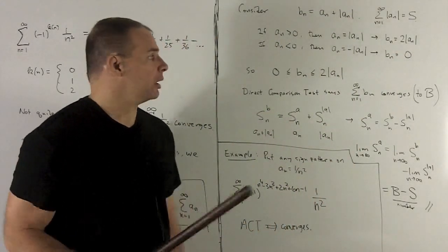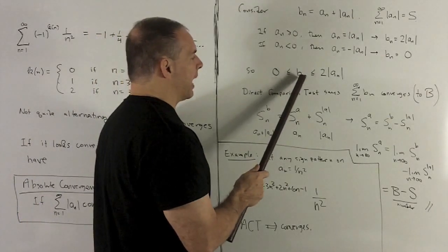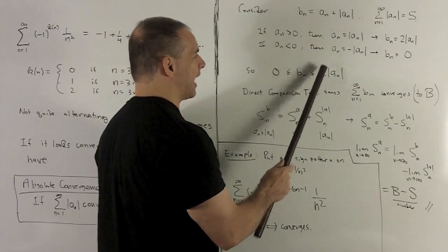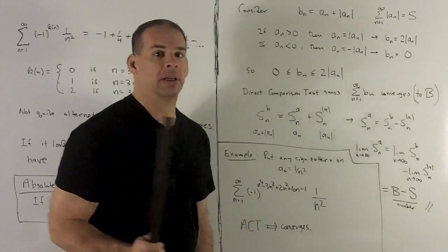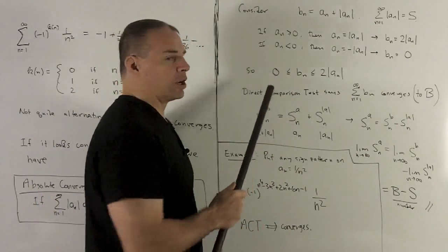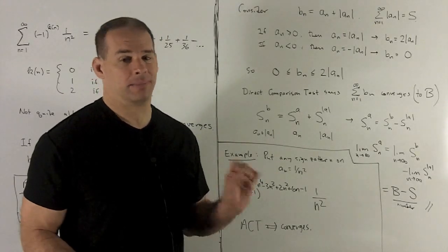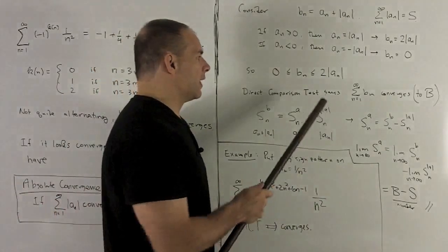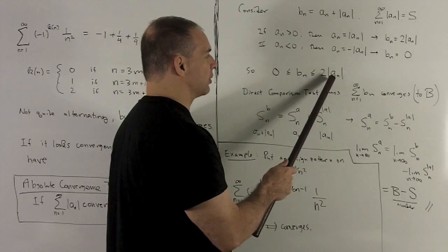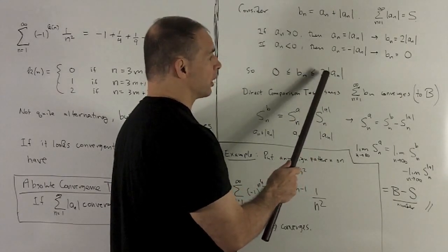What just happened? Well, my sequence b sub n is going to be between zero and twice the absolute value of a sub n. The series for zero converges. That's just adding zero to itself infinitely many times. That's going to be zero.